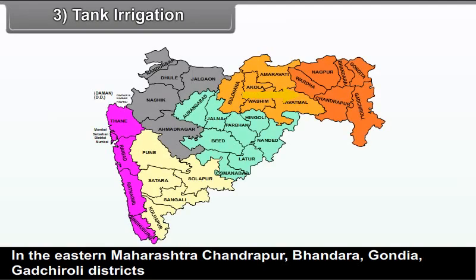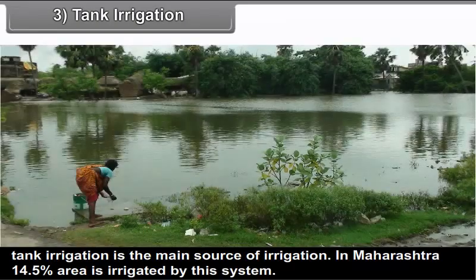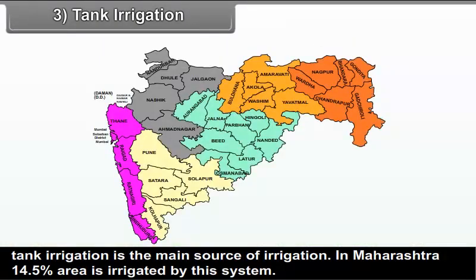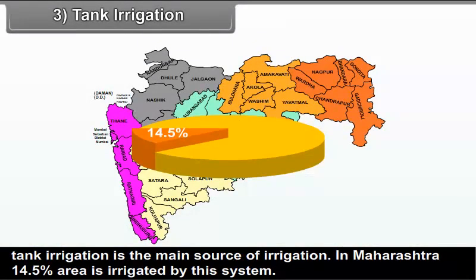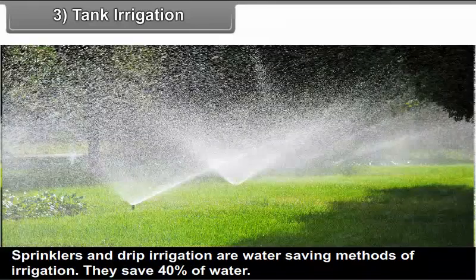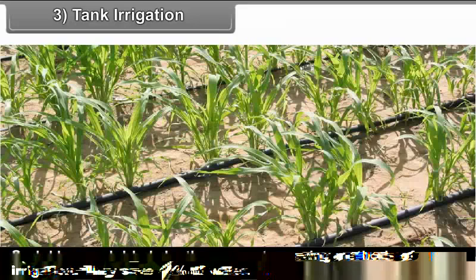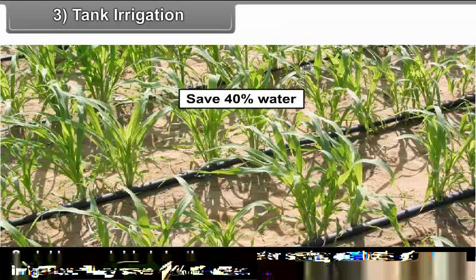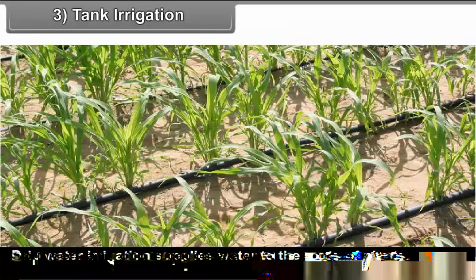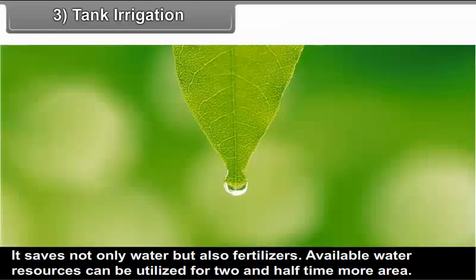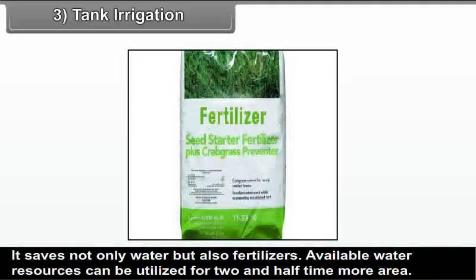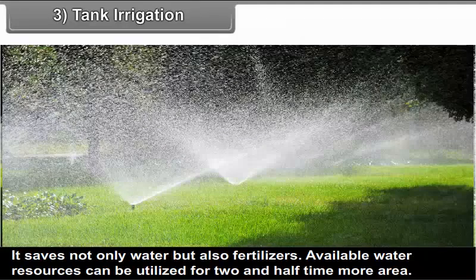Tank irrigation: In eastern Maharashtra, Chandrapur, Bhandara, Gondiya and Gadchiroli districts, tank irrigation is the main source of irrigation. In Maharashtra, 14.5% area is irrigated by this system. Sprinklers and drip irrigation are water-saving methods of irrigation — they save 40% of water. Drip irrigation supplies water to the roots of the plants and saves not only water but also fertilizers. Available water resources can be utilized for two and a half times more area. Only the required amount of water is used in sprinklers.